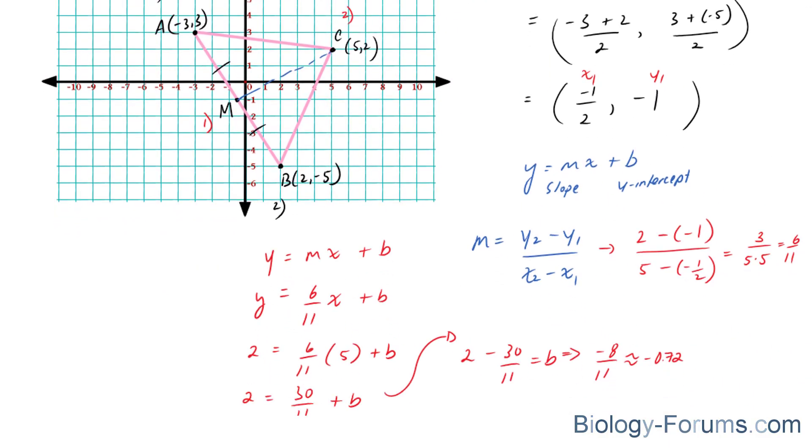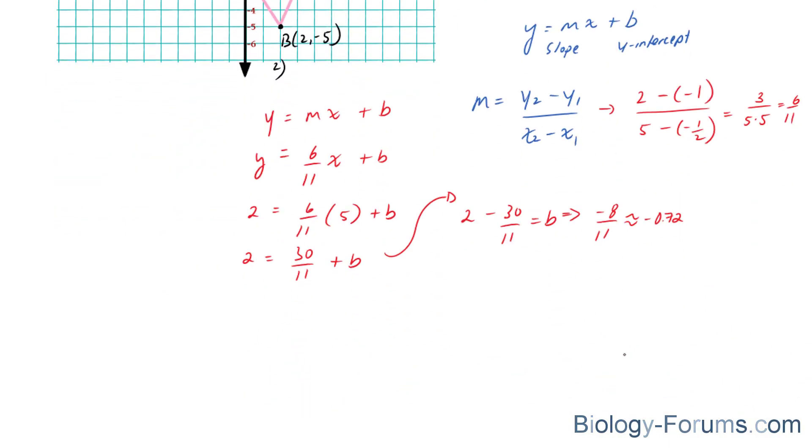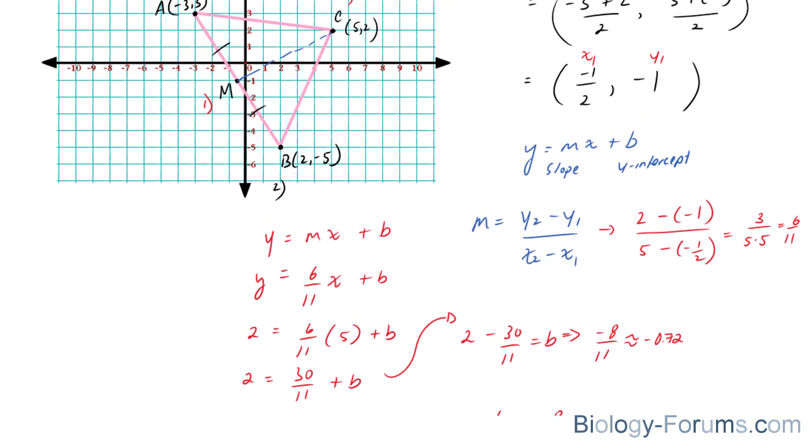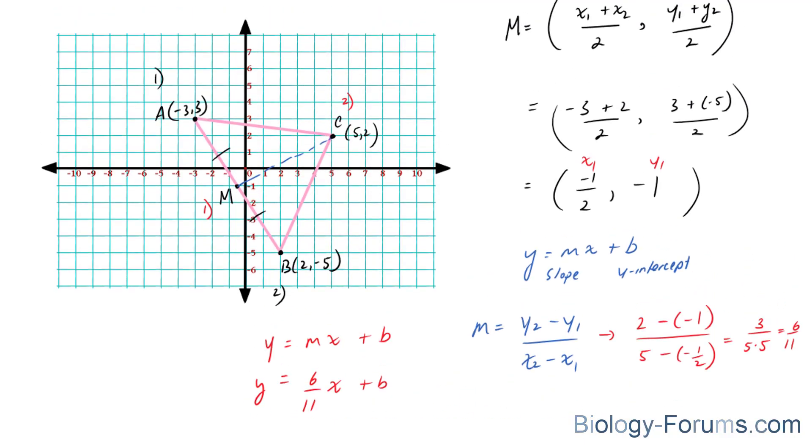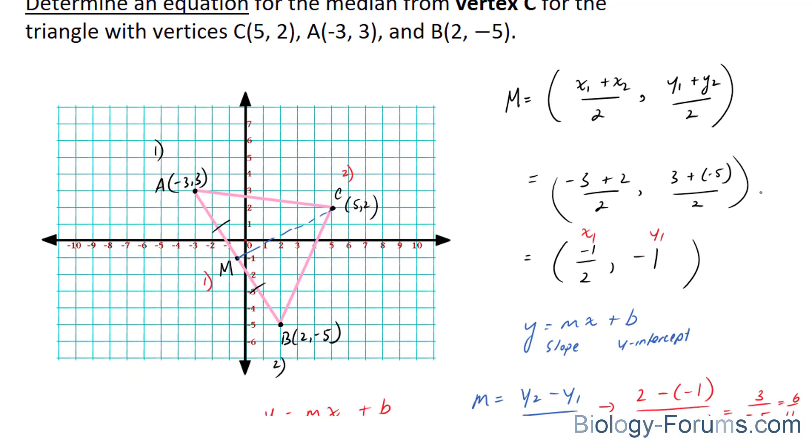We do have to put these numbers together, the m and the b. So y equals 6 over 11 x minus 8 over 11. And that equation represents the point between M and C, the equation that represents this blue line. And that is referred to as the bisector of CNM.